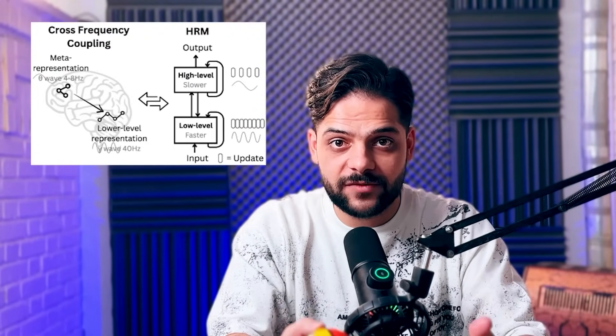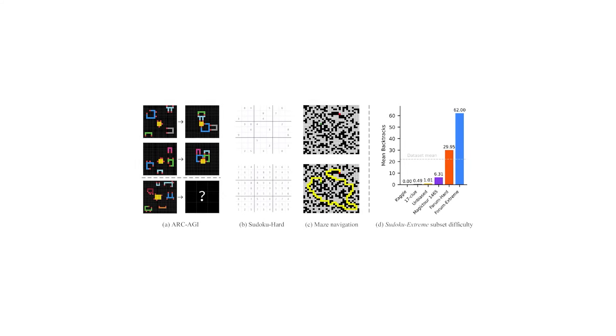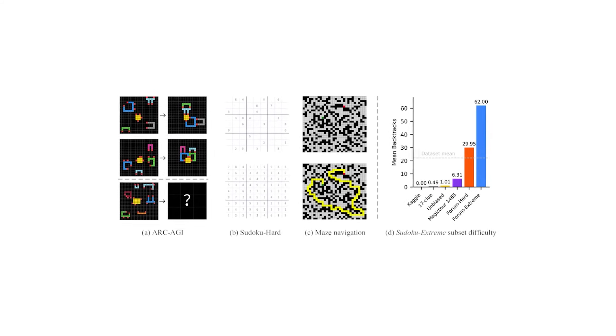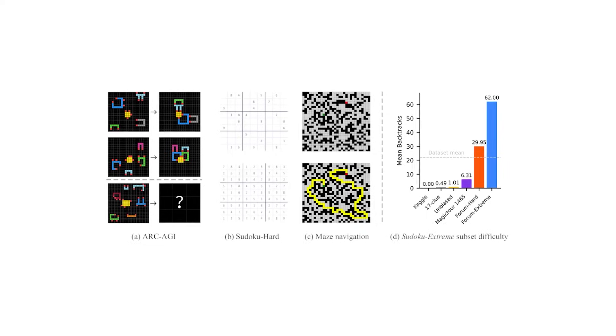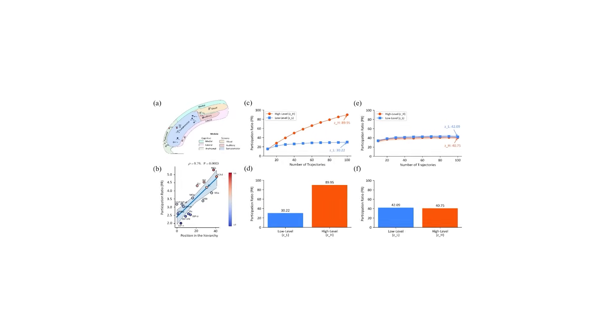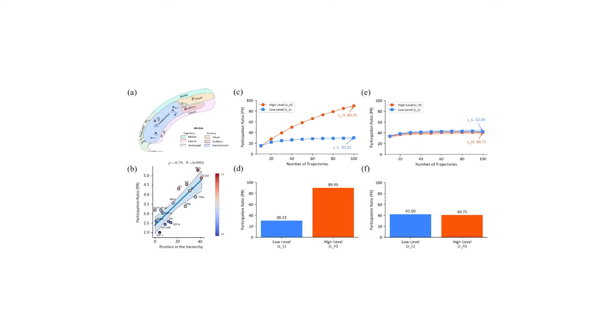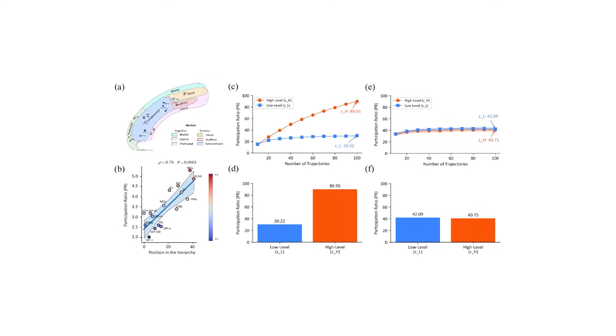HRM made both the CEO, the H module, and the worker, the L module, state-of-the-art transformer blocks. But they are not there to talk to each other in English or learn language. They are there to extract the features and understand the relations in any sequence of data. And that's how you marry recurrent neural networks and attention to make an incredibly smart and efficient learner like HRM.